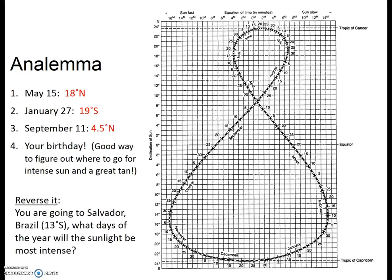Instead of finding the declination for a particular day of the year, you can also reverse it: take a latitude and figure out what days of the year it will get direct sunlight. For instance, perhaps you're going to go to Salvador, Brazil at 13 degrees south — what days of the year will the sunlight be most intense? There are two answers. Pause the video and see if you can figure it out. Looking at 13 degrees south on the analemma, it should be October 29th and, continuing across, February 14th.